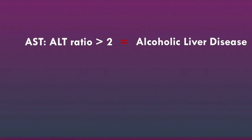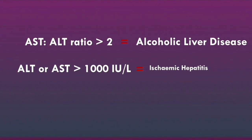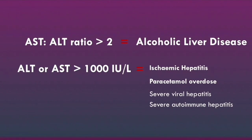Another key point is the causes of an ALT or AST greater than 1000 international units per liter. Very few conditions lead to such an increase. The major cause to remember is ischemic hepatitis, where ischemia to the liver leads to inflammation and values can typically be in the thousands. Another cause is paracetamol overdose. Severe viral hepatitis or severe autoimmune hepatitis can also significantly raise ALT or AST, but in these conditions the values typically do not exceed 1000 international units per liter.